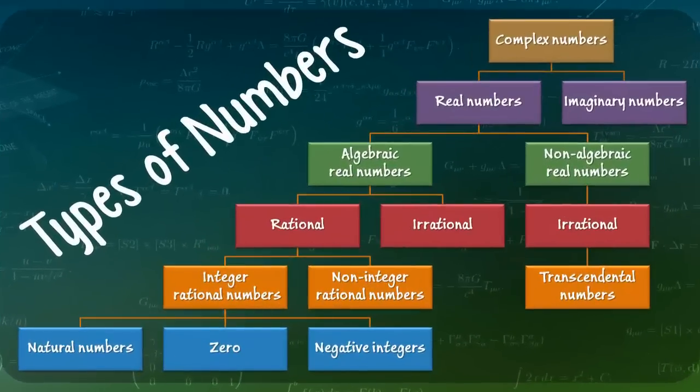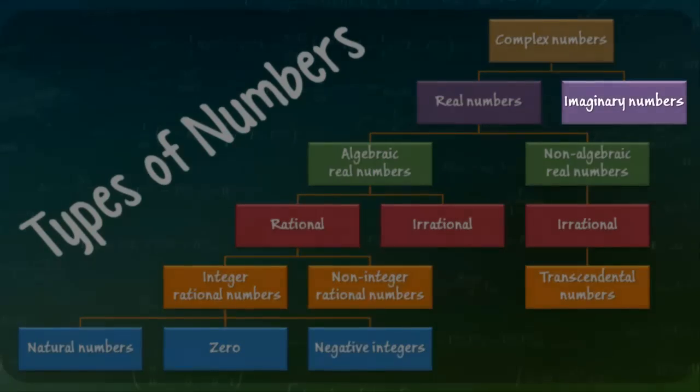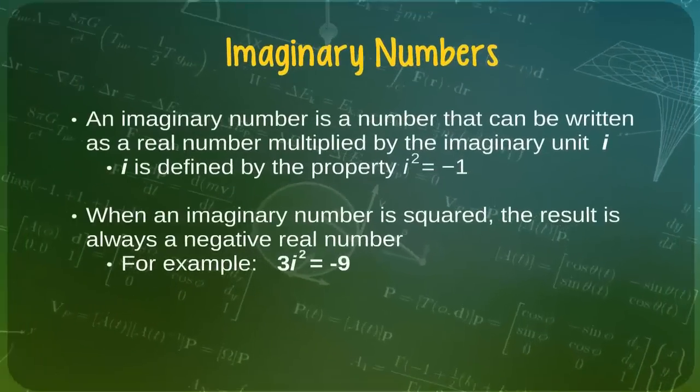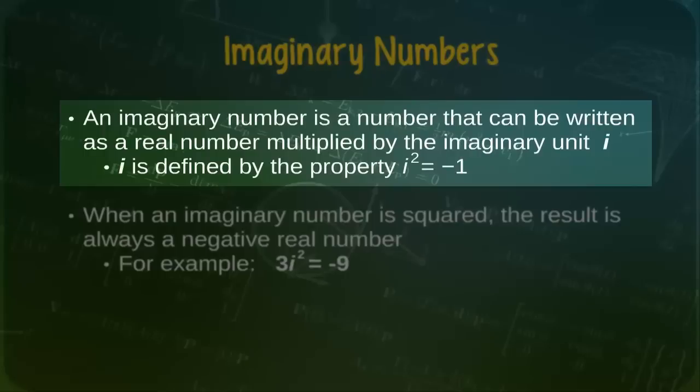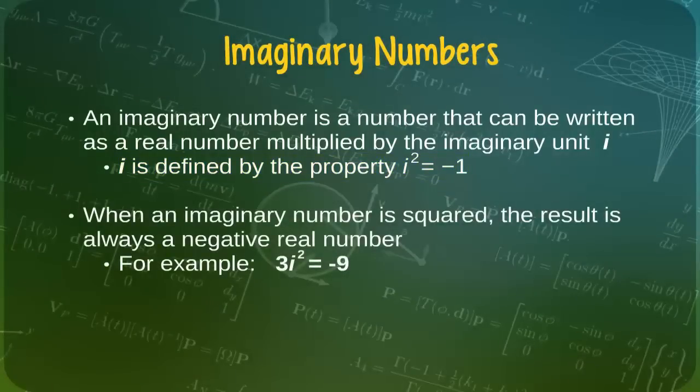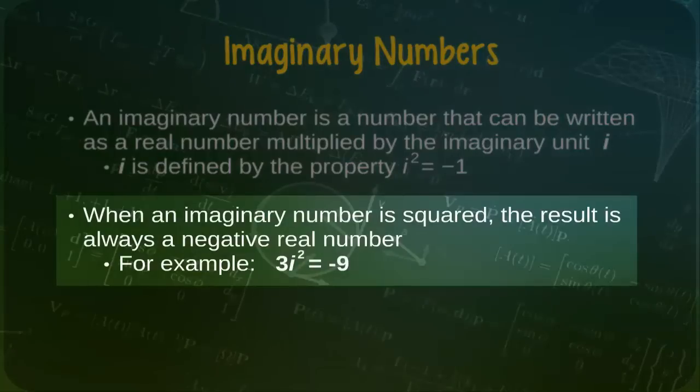Aside from the set of real numbers, the other major category of numbers is the imaginary numbers. An imaginary number is a number that can be written as a real number multiplied by the imaginary unit i, where i is defined by the property i squared equals negative 1. Except for the number 0, which modern mathematicians understand to be simultaneously both a real number and an imaginary number, an interesting characteristic of imaginary numbers is that they always produce negative real numbers when squared. The square of the imaginary number 3i, for example, is negative 9.